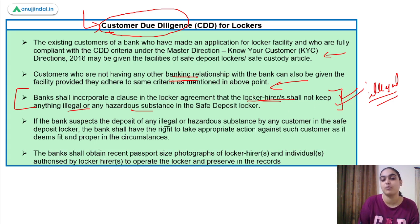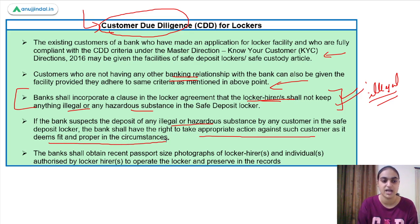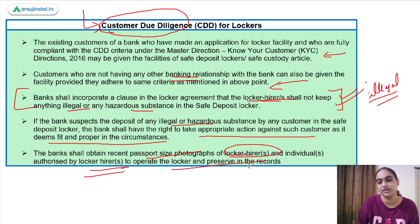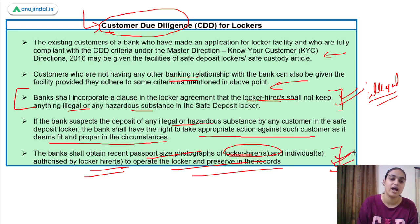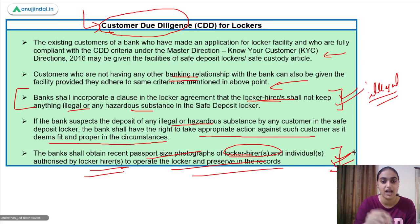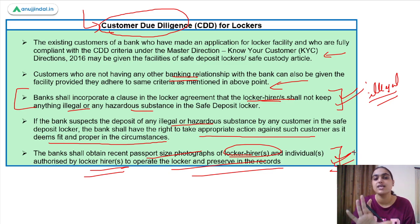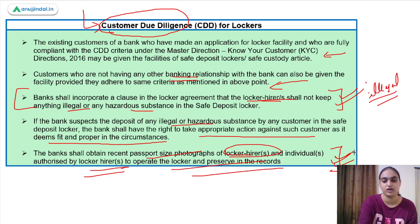If the bank suspects the deposit of anything illegal, it can take appropriate action against the customer as it sees fit. The bank also needs to obtain passport-size photographs of the locker hirer and any individual authorized to operate the locker, and preserve these for verification purposes.